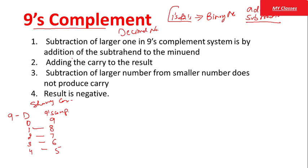अब 9's Complement के through subtraction perform करनी है तो कैसे करेंगे? Subtraction of the larger number in 9's Complement system is done by the addition method। चाहे बड़े number को छोटे से subtract कर रहे हों, या छोटे को बड़े से — दोनों cases में addition method use होती है। जो carry होगा, उसको हमें result में add करना है।